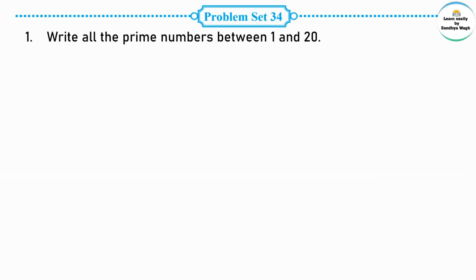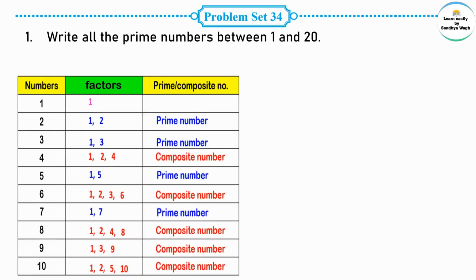Now let us solve Problem Set 34. Question 1: Write all the prime numbers between 1 and 20. Prime numbers are those which have only two factors or divisors. We have already listed the factors for numbers 1 to 10. Number 1 is neither prime nor composite. Numbers 2 and 3 have only two factors, so they are prime numbers.